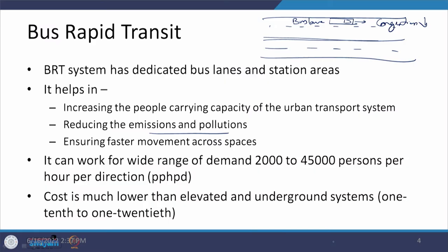This system can be utilized for different capacities defined in terms of persons per hour per direction (PPHD), and these values can vary from 2,000 to 45,000. Another positive aspect is that the cost of providing this type of facility is quite lower — almost 1/10 to 1/12 of the elevated or underground facilities provided for mass transportation of passengers.